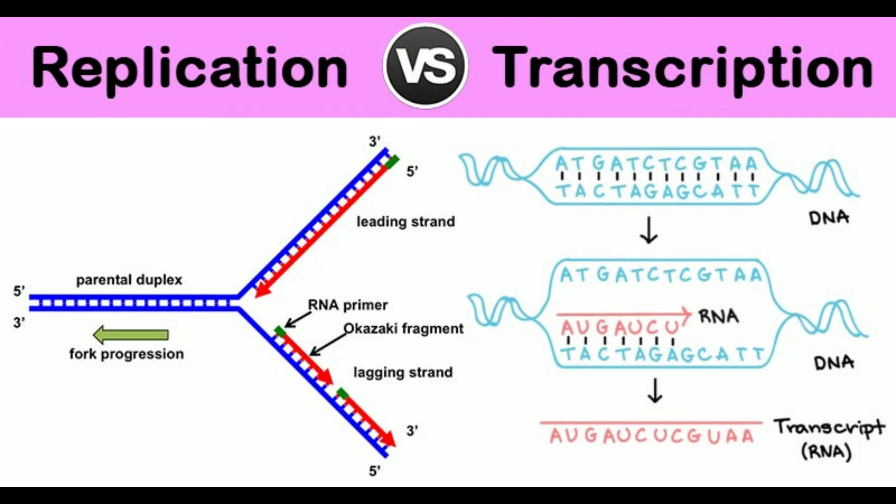10. Enzymes: DNA replication requires DNA helicase and DNA polymerase. Transcription requires RNA polymerase.